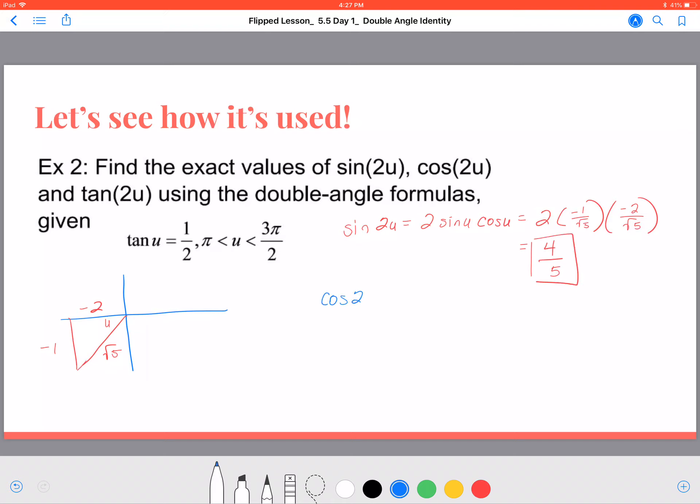All right, for the cosine of 2u, that's going to be cosine squared of u minus the sine squared of u. We already said that the cosine of u was negative 2 over root 5. We're going to square that, and we're going to subtract the sine of u, which is negative 1 over root 5, and square that. This will become 4 over 5, because negative 2 squared is 4 and root 5 squared is 5. We'll subtract out 1 over 5, giving us an answer of 3 fifths for the cosine of 2 times angle u, or doubling angle u.